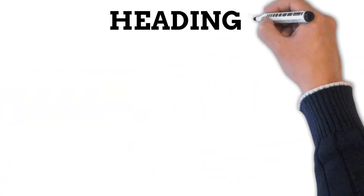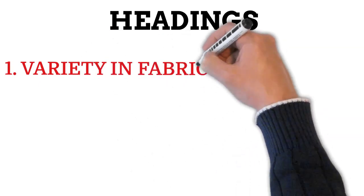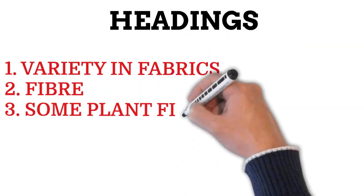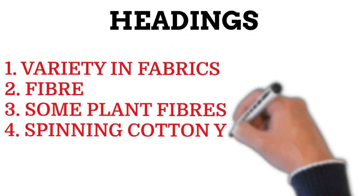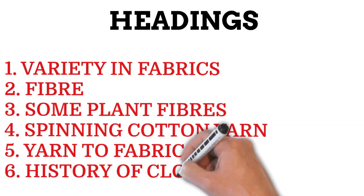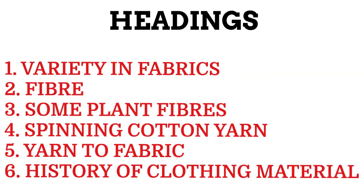This chapter includes 6 settings, namely variety in fabrics, fiber, some plant fibers, spinning cotton yarn, yarn to fabric, and history of clothing material.